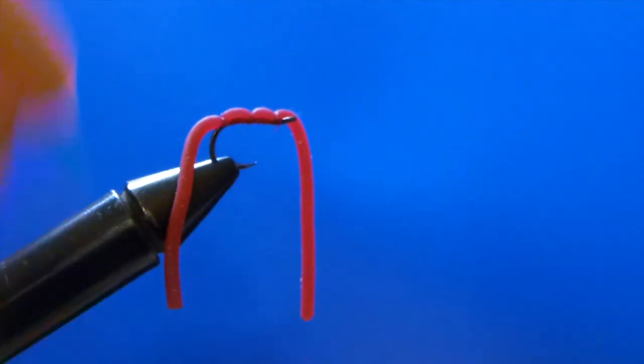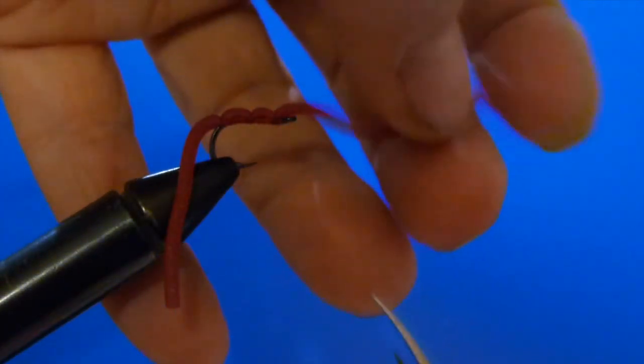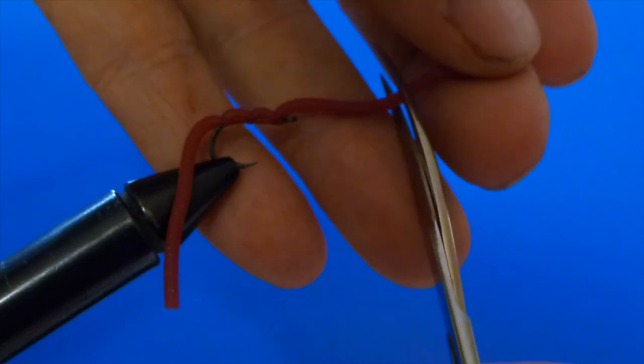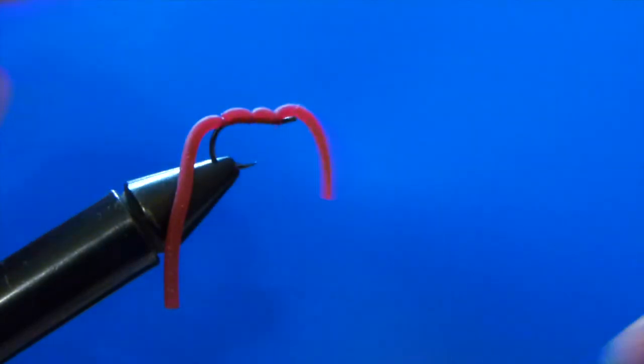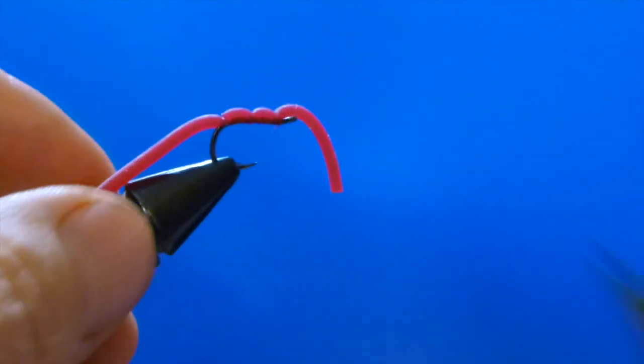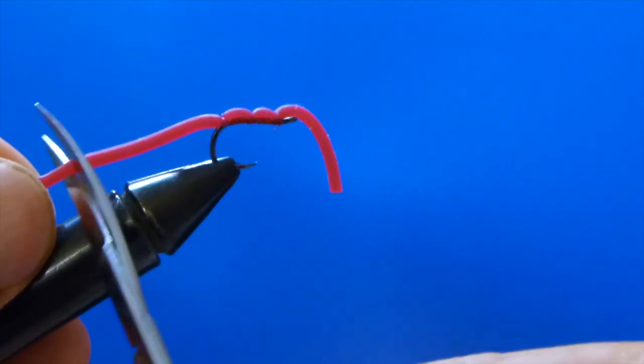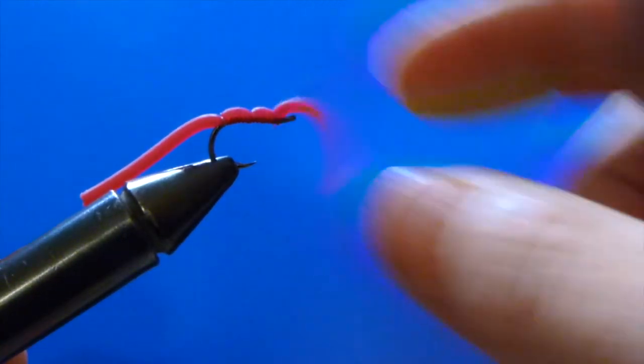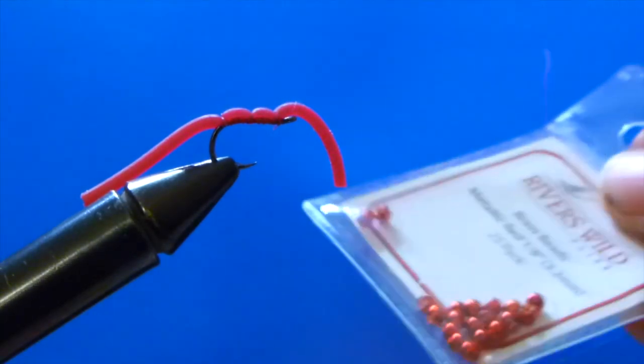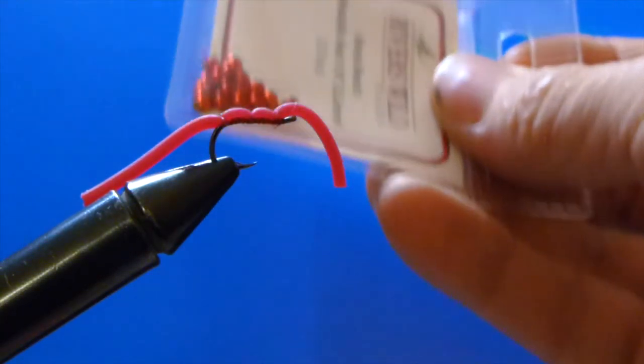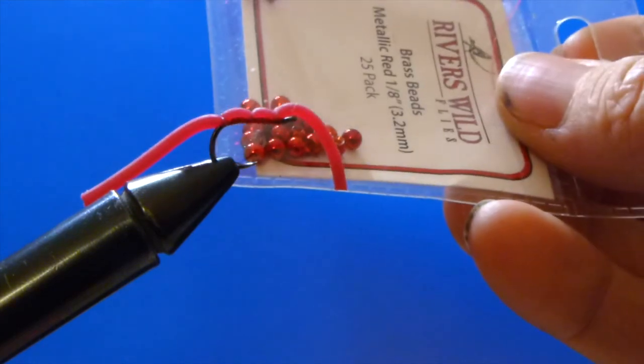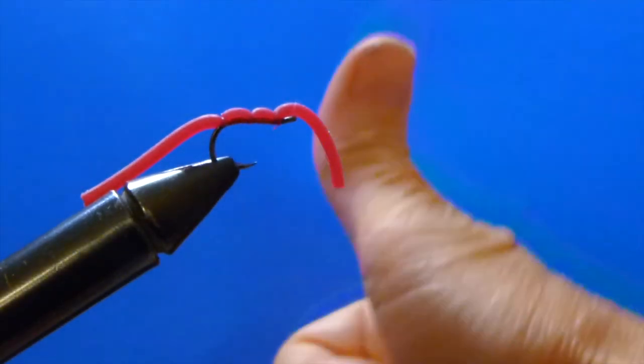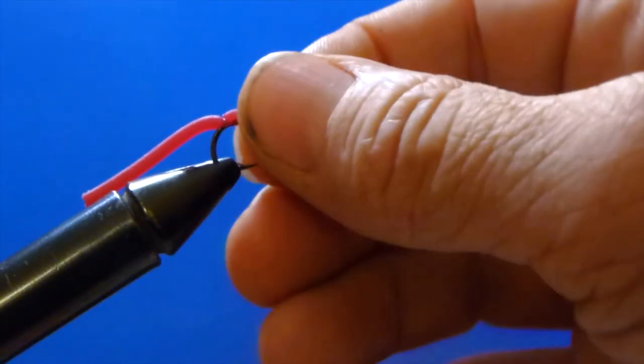And I left this squirmy wormy extra long and I'll just cut it to the length I want now. And we're good to go. So another option is we can also use the red brass beads in there to help weigh it down just like we did with the San Juan worm.